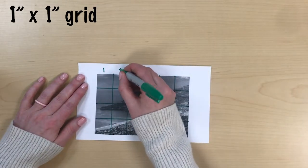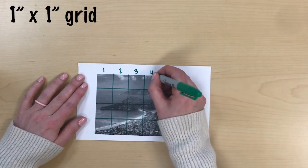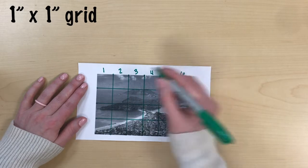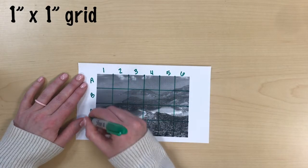Going to number across the top you should have six boxes in your four by six inch photo and ABCD along the side.